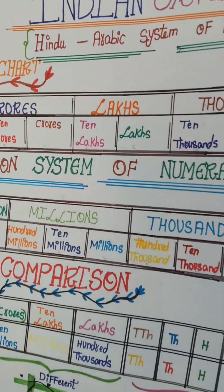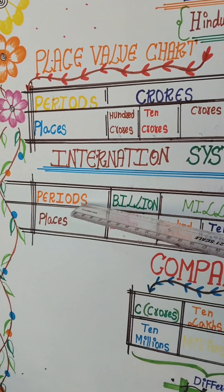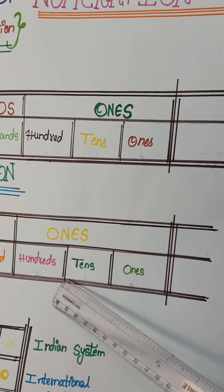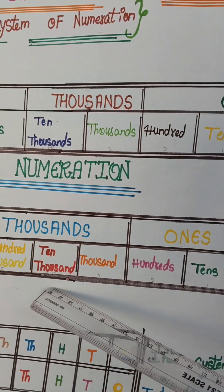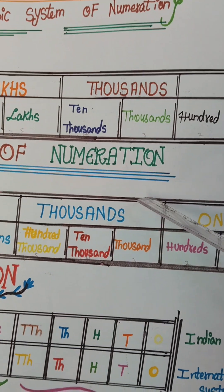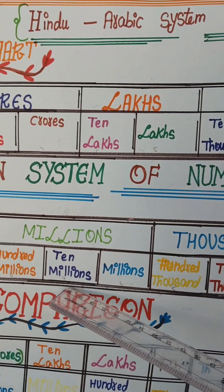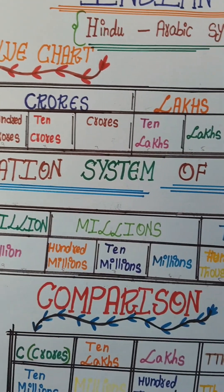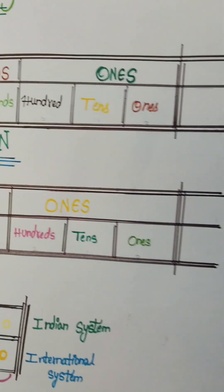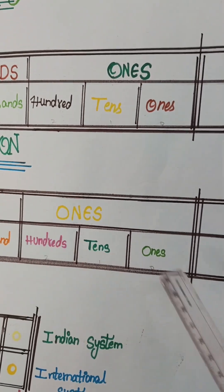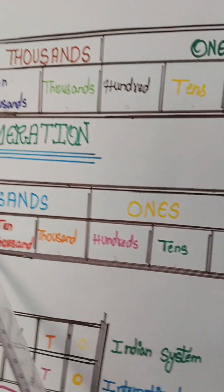Now coming to the international system of numeration — in this also you have places and periods. Places start with ones, tens, hundreds, and these three places are grouped in the ones period. Then you have thousands, ten thousands, and hundred thousands — these three places are grouped in the thousands period. Then you have millions, ten millions, and hundred millions — these three places are grouped in the millions period. Then you have billions.